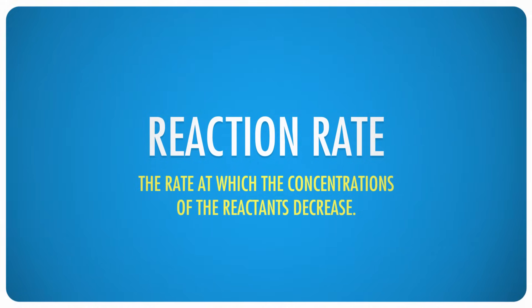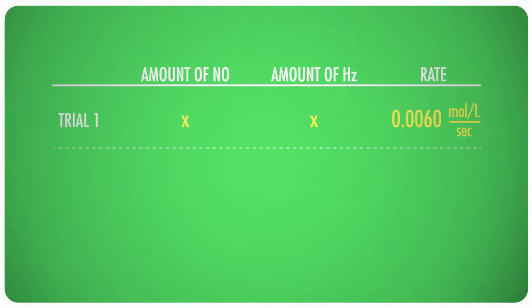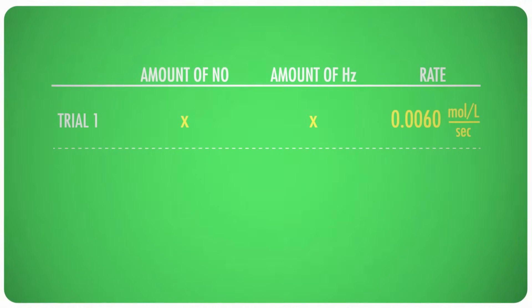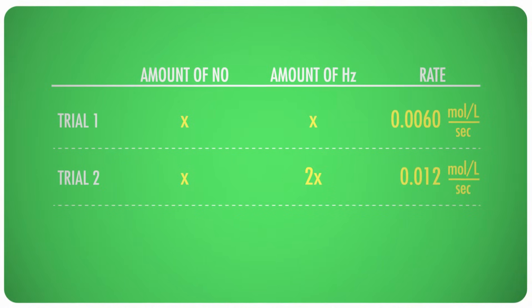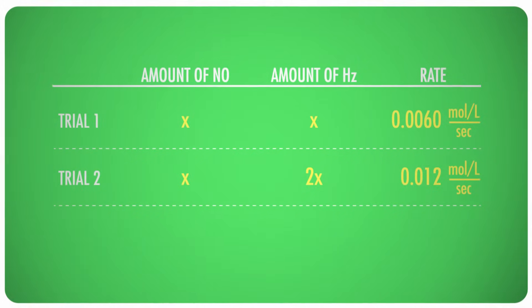The exponents in rate laws are tricky, even for professional chemists and engineers, because like I said, they can only be determined experimentally. It's kind of intense, but we can handle it. Check it out. Suppose we did the reaction a few different ways and calculated the rate for each instance. Let's say that with the first reaction we got a rate of 0.0060 moles per liter per second, and then we repeat the reaction with the same amount of nitric oxide, but this time with twice as much hydrogen as before. And now we find that the rate of the reaction is 0.012 moles per liter per second.